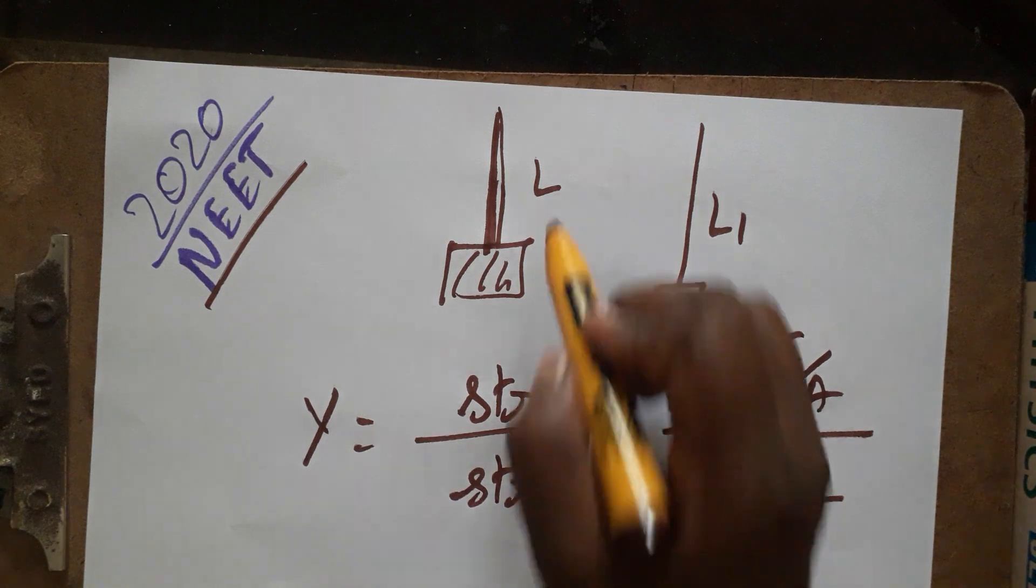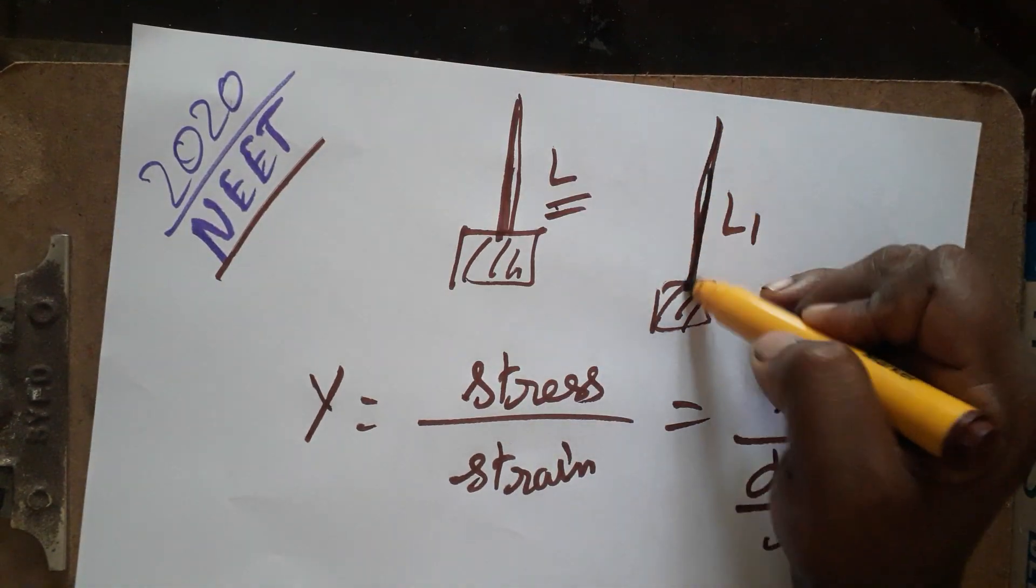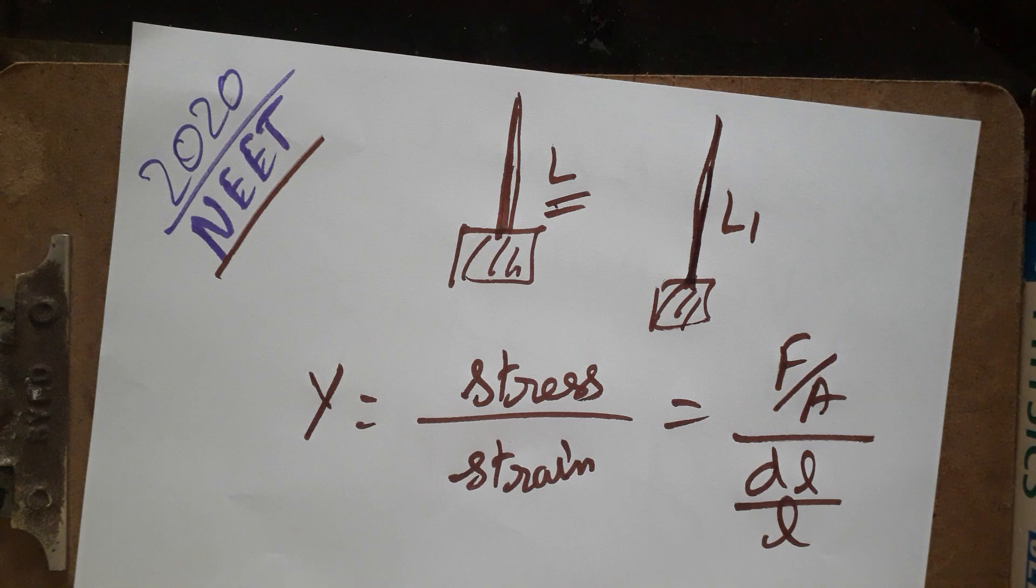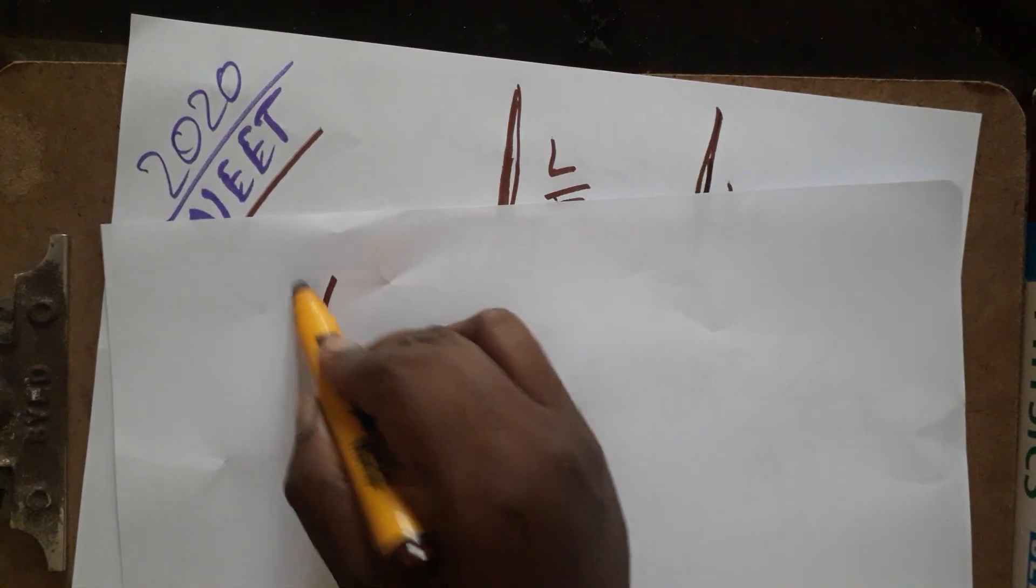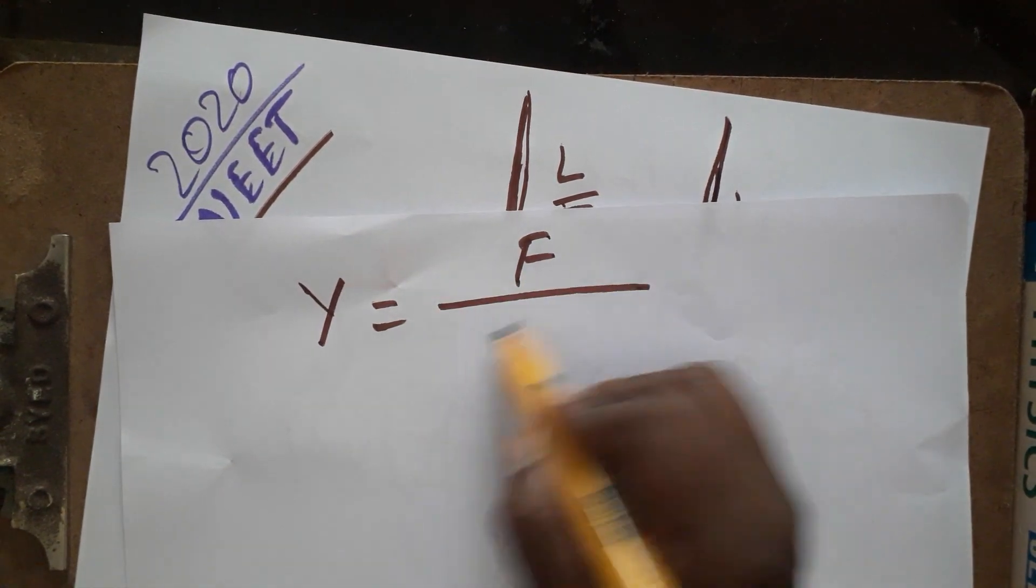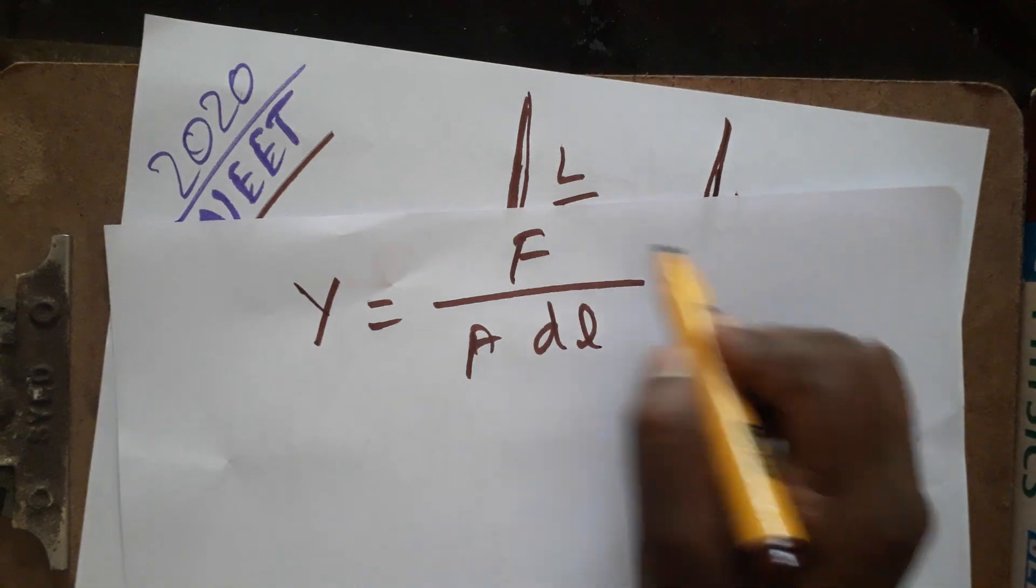Original length is L, but after we put the load it is going to be increased to L1 length. Now modulus of elasticity: F divided by A, change in length... the original length will go in the numerator like that.